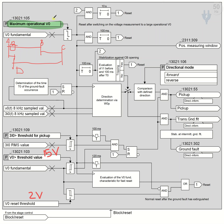For further discussion: in the case of a mesh or ring system, if V0 from calculation or measurement is greater than 2.5 volts, we take that V0 value and multiply it by 1.2. This result is then set as the maximum operational V0. So the maximum operational zero sequence voltage for a ring system = V0 × 1.2.